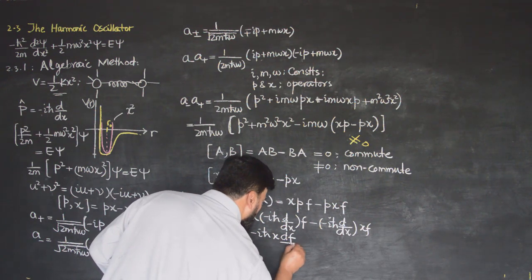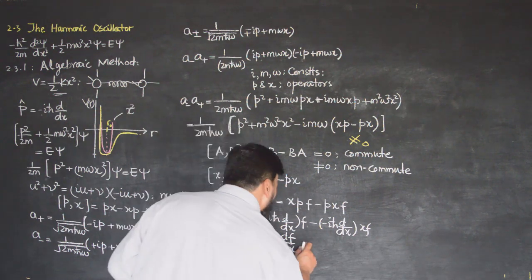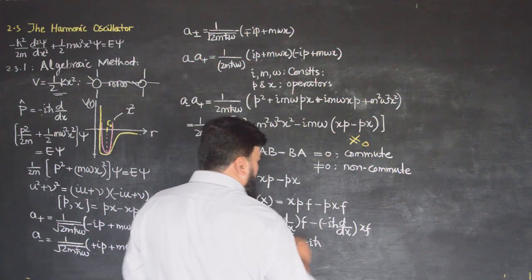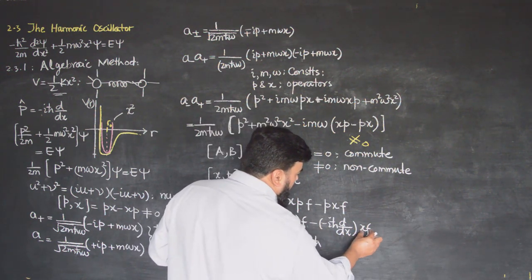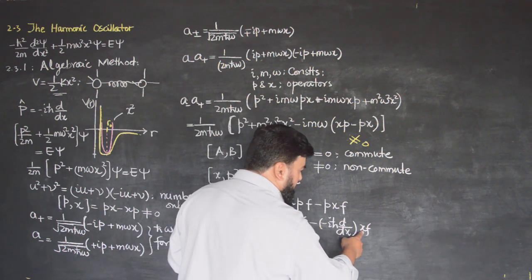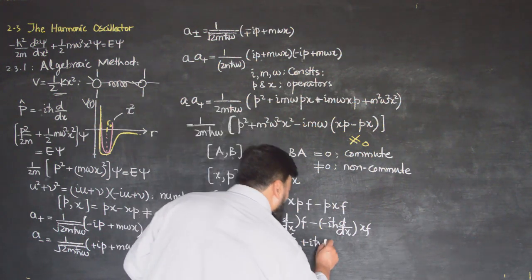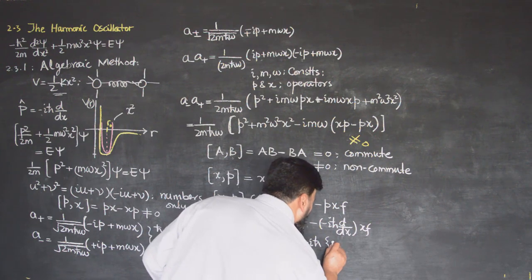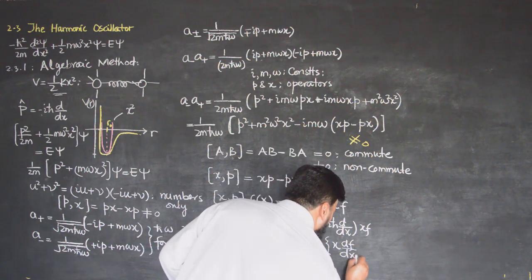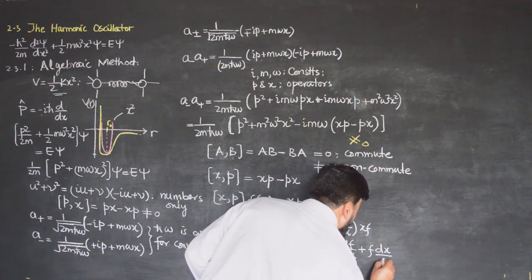The second term becomes +iℏ times d/dx of (x·f). Here d/dx operates on the product x·f, so we apply the product rule: first function times derivative of second, plus second function times derivative of first.